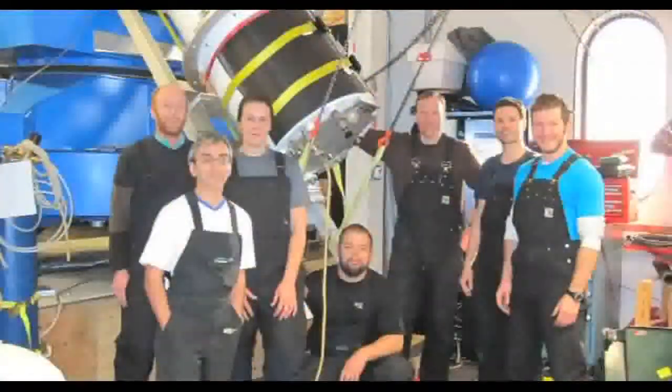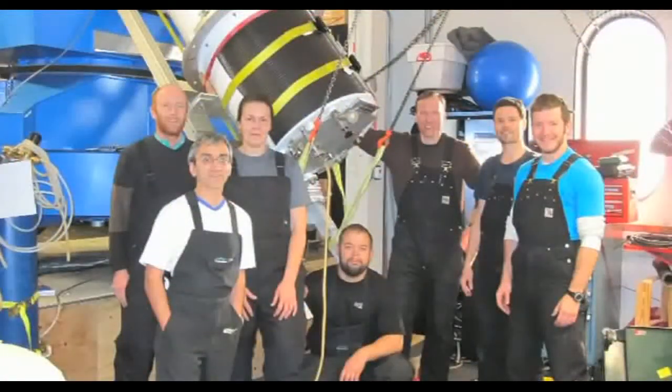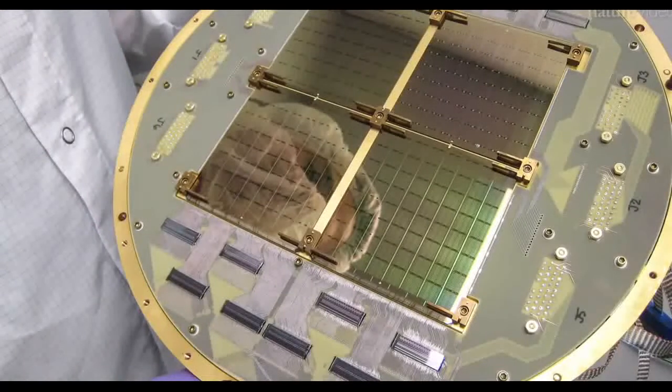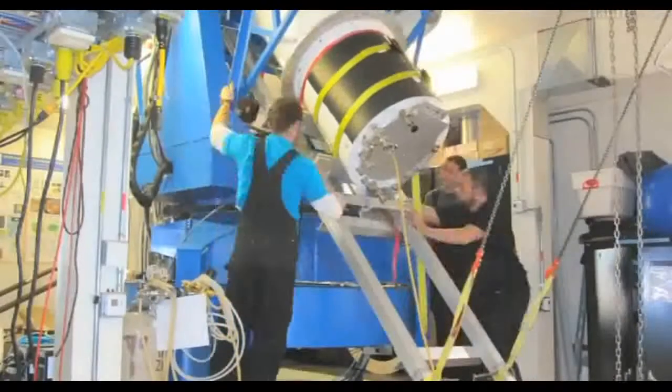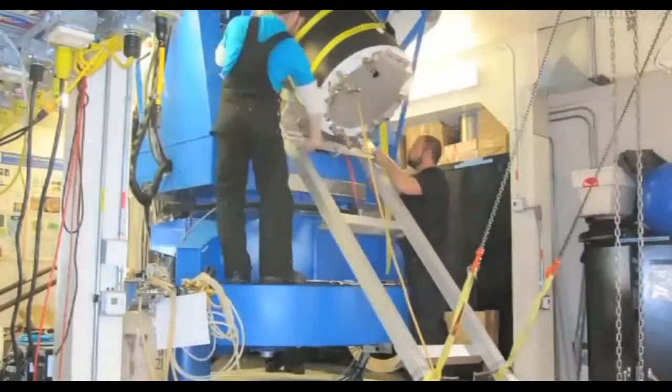To find out, a team led by the Center for Astrophysics in Massachusetts built super-sensitive radiation detectors. They took them to the South Pole, installed them in a telescope, and started looking for ripples in the sand.